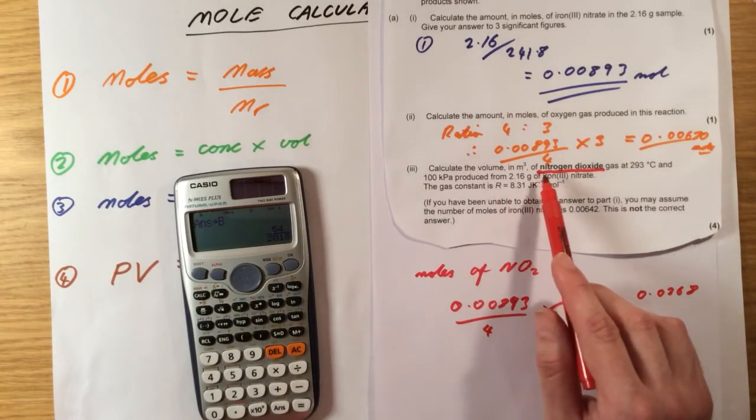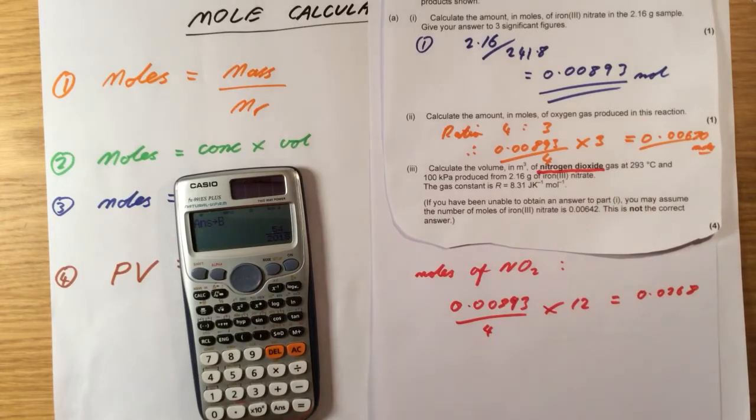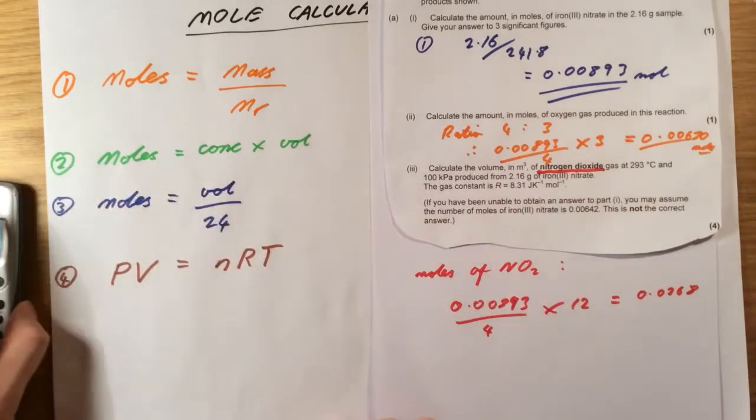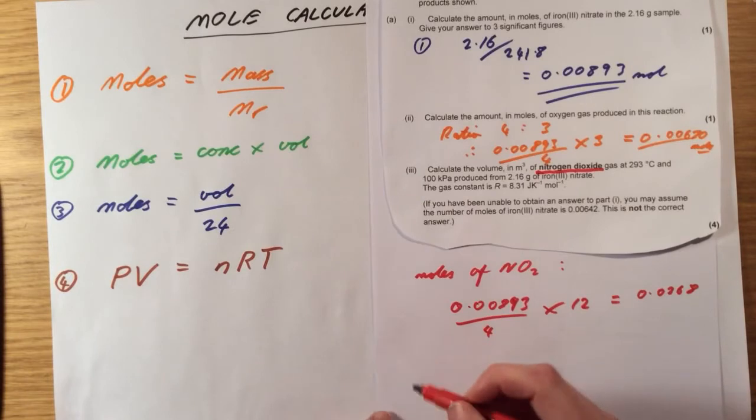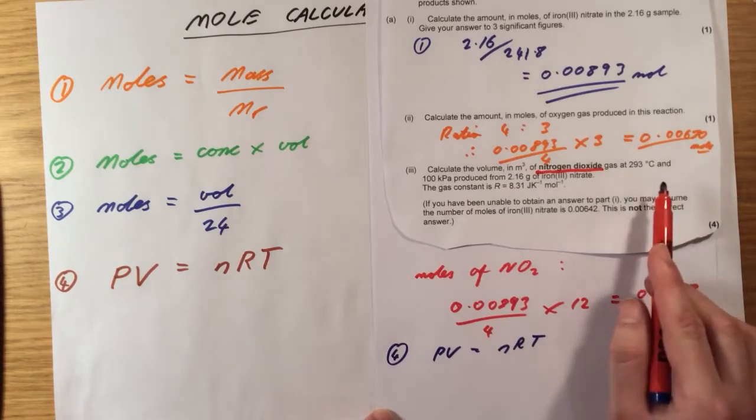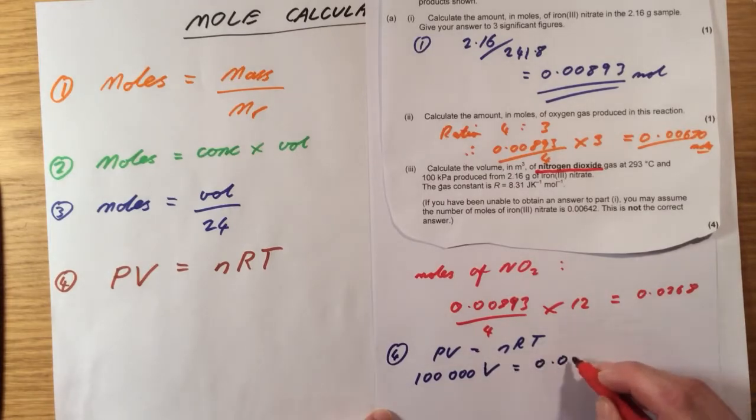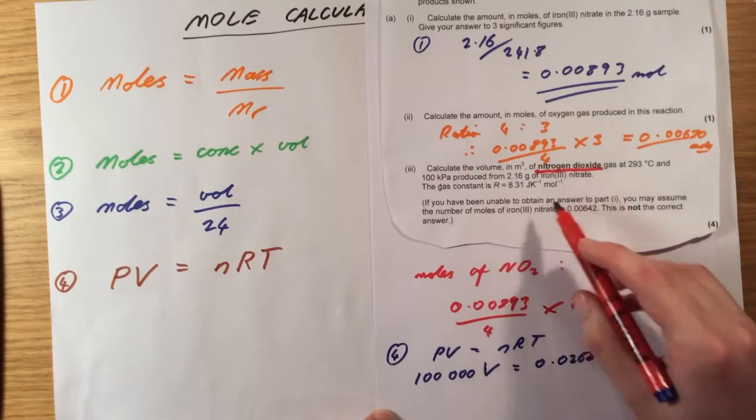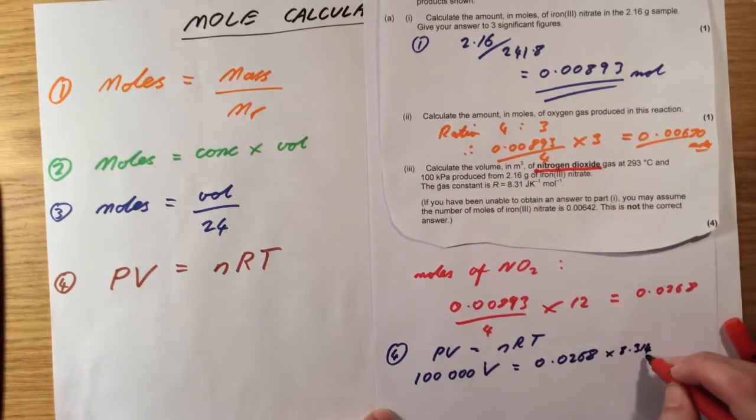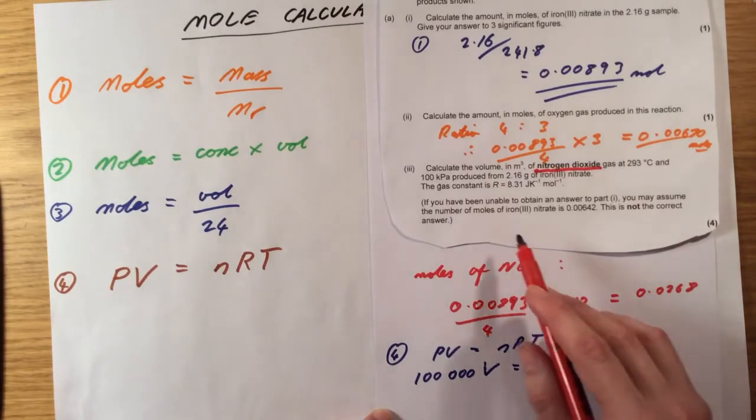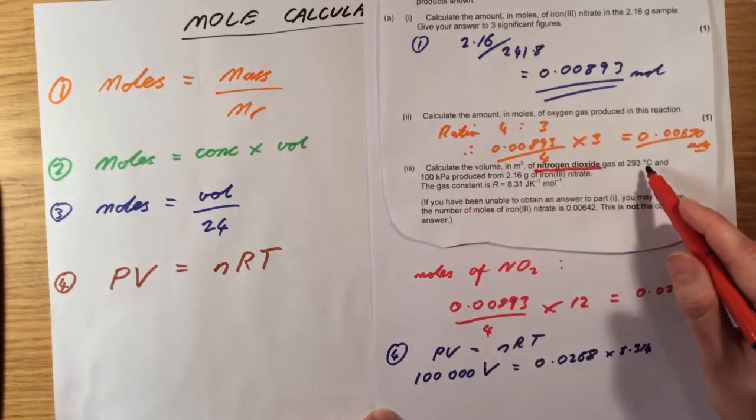What do I need to do next? The volume in meters cubed of nitrogen gas produced. So this time, I'm going to be using equation 4, PV equals nRT. So let's just put in the numbers that I've got and see where we get to. P, it's telling me 100 kilopascals. 100 kilopascals is 100,000 pascals. It wants the volume, so V is what I want to work out. I've just calculated the number of moles, 0.0268. It gives me R, 8.314. And it tells me that the temperature is 293 degrees C.